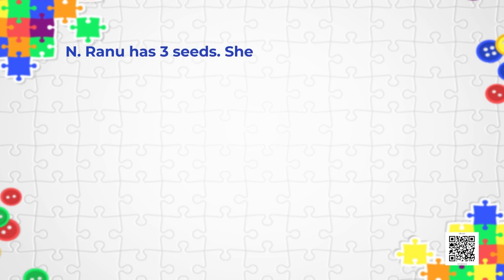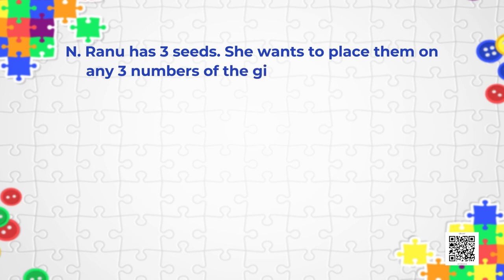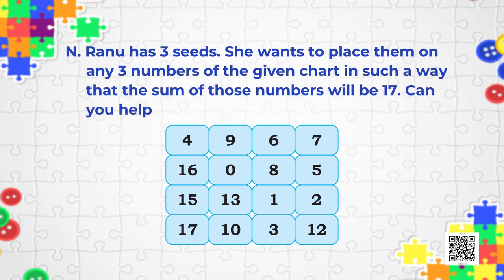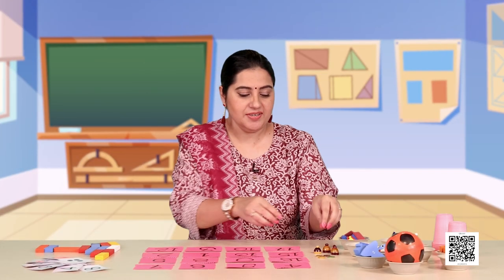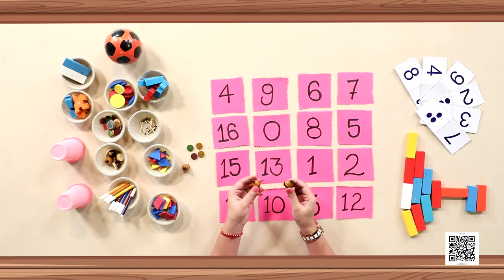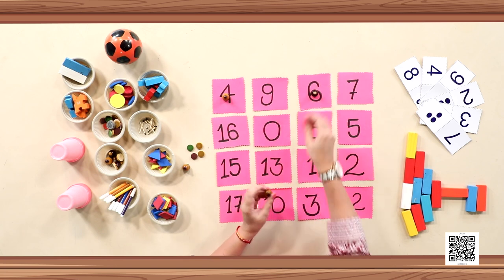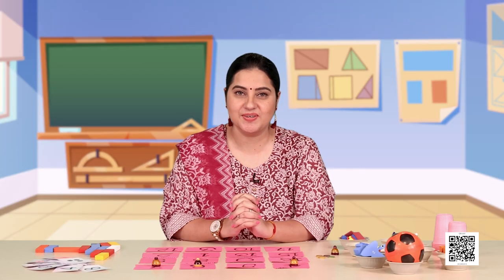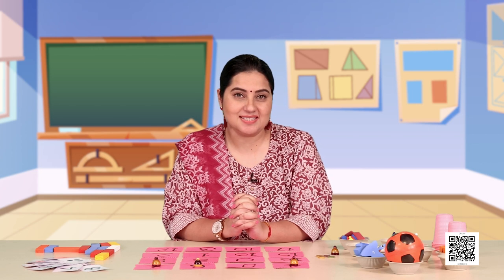After that puzzle it's time for Puzzle N. My friend Ranu has three seeds and she wants to place them on any three numbers of this chart such that the sum of those numbers will be 17. Can you help Ranu? For example: 4 plus 6 is 10, plus 7 is 17. I have solved the first one — now you have to do it on your own for the rest.